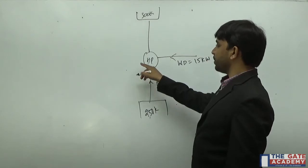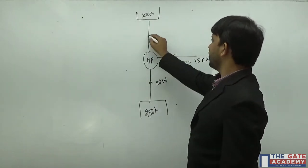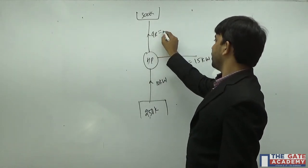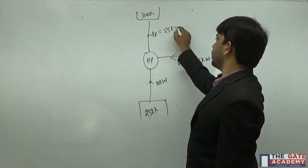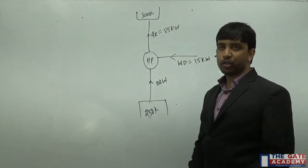I can write that the heat rejected here is 10 plus 15, that is 25 kilowatt. Heat rejected to the room is 25 kilowatt.